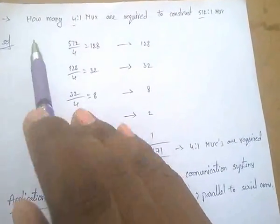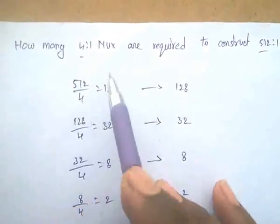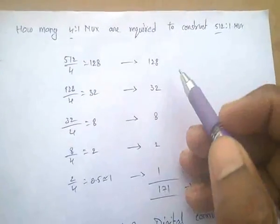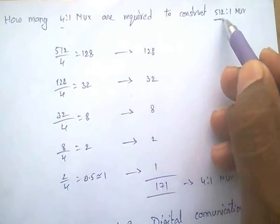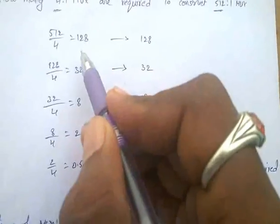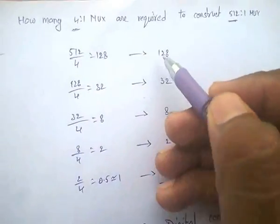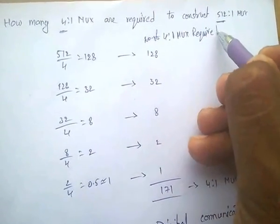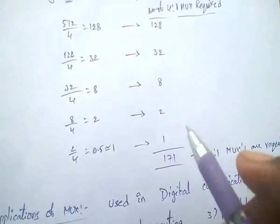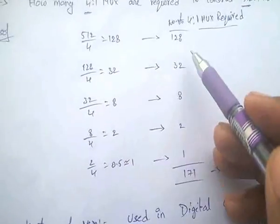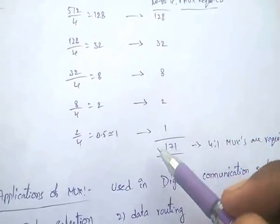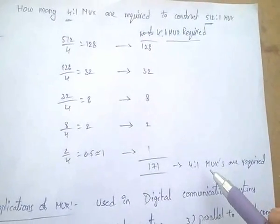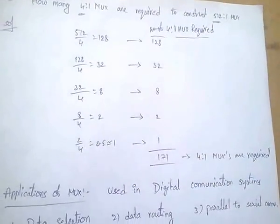An important PSU exam question: how many 4-to-1 multiplexers are required to construct a 512-to-1 multiplexer? Dividing 512 by 4 gives 128, then 128 by 4 gives 32, then 8, then 2, then 1. Adding these up: 128 + 32 + 8 + 2 + 1 = 171. So 171 four-to-one multiplexers are required.